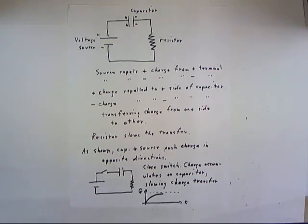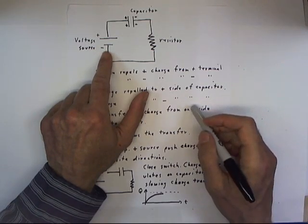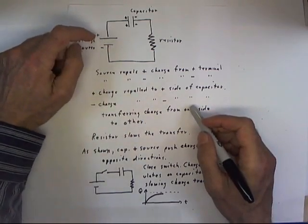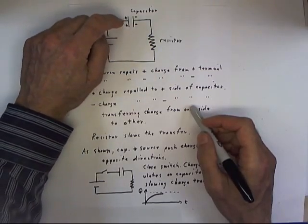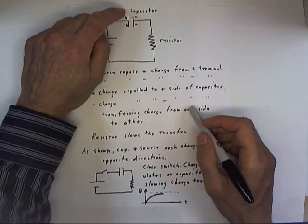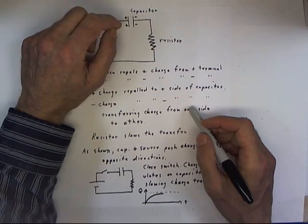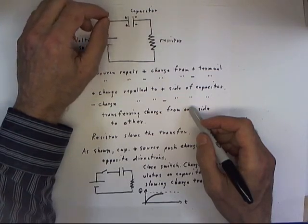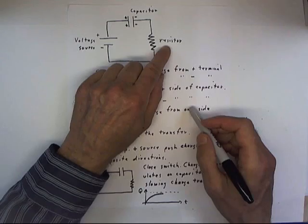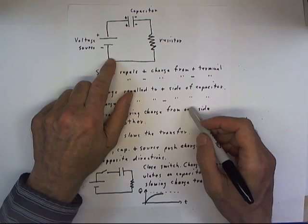The simplest circuit we'll consider consists of a voltage source — just think of a battery with the positive terminal here and the negative terminal here — a capacitor, which is simply a device that has two locations from which you can draw charge or onto which you can deposit charge, and a resistor, which is simply something that resists the flow of current, the flow of charge through the circuit.